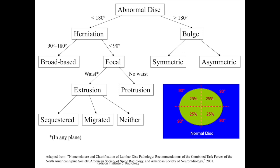To summarize: an abnormal disc prolapse covering more than half the circumference — more than 180 degrees — is called a disc bulge, which can be symmetrical covering all 360 degrees, or asymmetrical covering less than 360 but more than 180 degrees. Disc herniations denote less than 180 degrees or less than 50% of the disc margin. These can be broad-based when between a quarter and half of the disc margin, or focal when less than a quarter of the disc margin or 90 degrees.